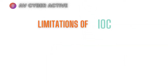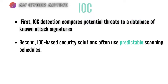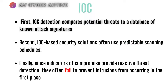IOCs do have a few limitations. First, IOC detection compares potential threats to a database of known attack signatures — it only checks hash values, IP addresses, and proxy URLs against a pre-populated list. Second, IOC-based security solutions often have predictable scanning schedules, relating back to IOC's static nature. Finally, since IOCs provide reactive threat detection, they often fail to prevent intrusions from occurring in the first place.